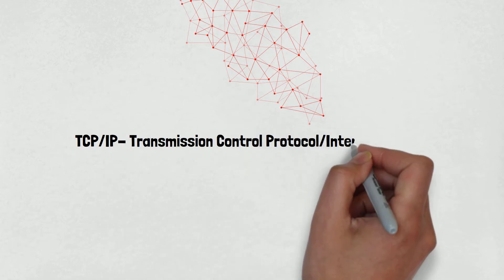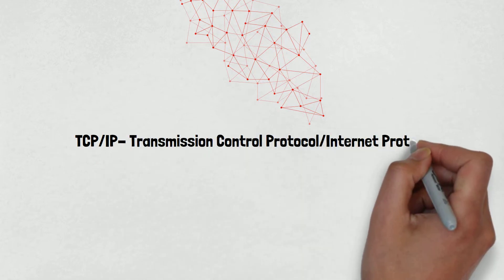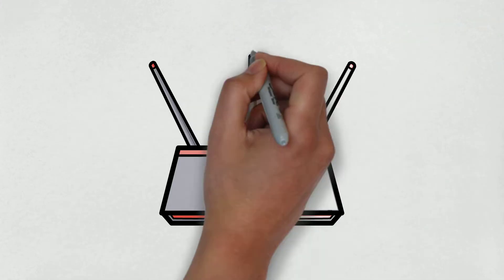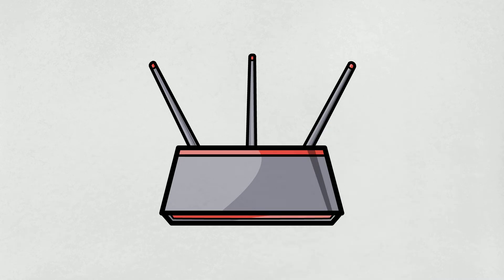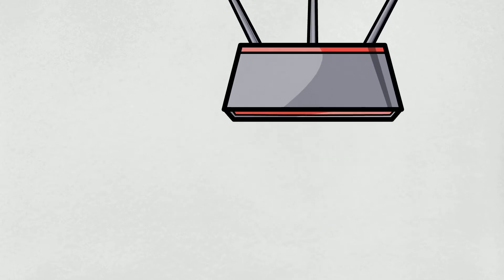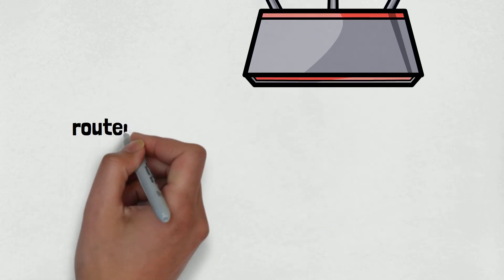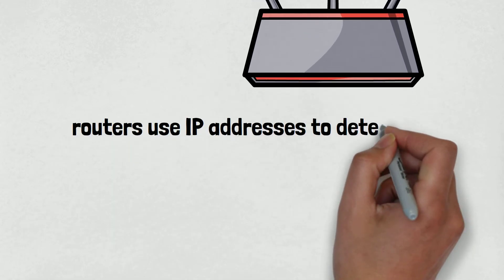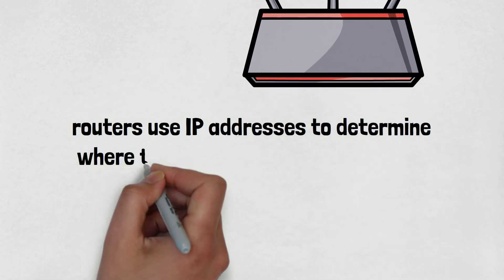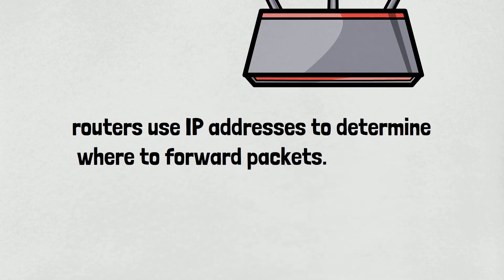Number 3 is Router. A router is a networking device typically used to interconnect LANs to form a Wide Area Network, or WAN, and as such is referred to as a WAN device. IP routers use IP addresses to determine where to forward packets. An IP address is a numeric label assigned to each connected network device.